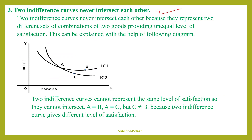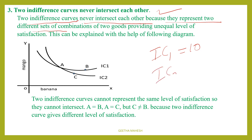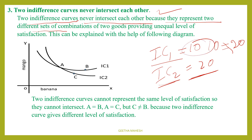The next point is: two indifference curves never intersect each other. If IC1 is equal to IC2 at one point, and IC2 is equal to IC2 at another point, can you say that 10 is equal to 20? That situation shows they are intersecting, which is a contradiction.